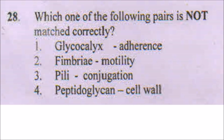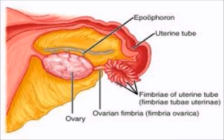The next question asks which pair is not matched correctly. The answer is fimbriae for motility — this is a little confusing. Fimbriae are finger-like projections attached to the ovary. The egg cells will be passed to the uterus through the fimbriae. However, fimbriae themselves do not act as motility structures; rather, the cilia on the surface of fimbriae provide the propelling force to the egg so that it can propel to the uterine tube.